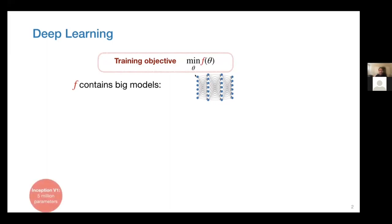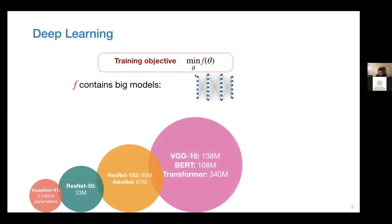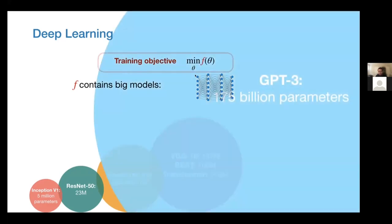If you look at the size of neural networks, there's a very clear trend: the size has increased a lot since maybe ten years ago. The Inception model contains 5 million parameters, ResNet-50 contains 23 million parameters, and recent GPT-3 models contain 175 billion parameters — a huge network. This makes training very challenging because we are in the so-called over-parameterized regime, where the number of parameters is much larger than the number of training data points.